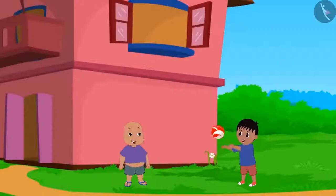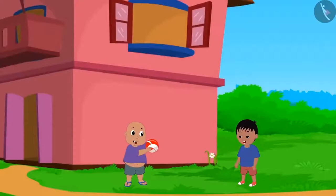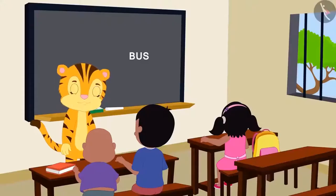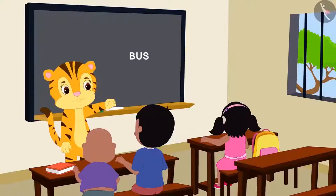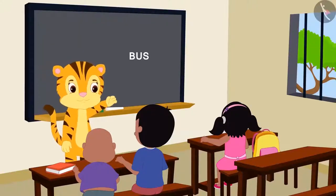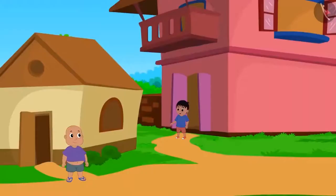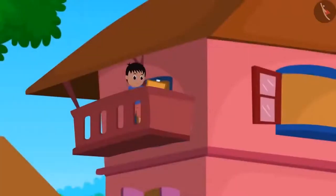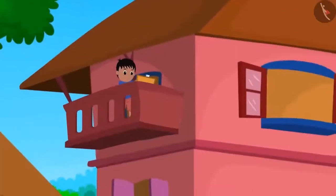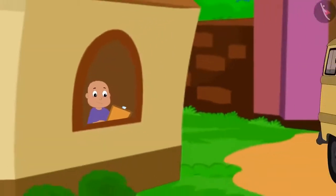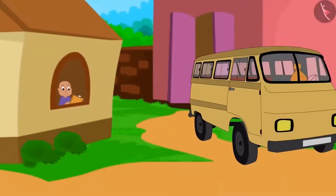Raju and Bablu are best friends. In the classroom, their teacher Mrs. Khanna asked them to draw a picture of a bus as homework. Both of them went home, looked out from the windows of their house, and began to draw the picture of a bus parked in their lane.